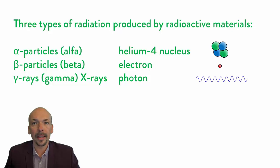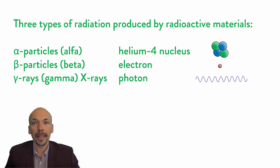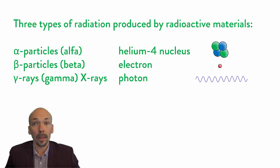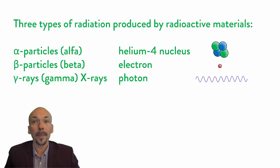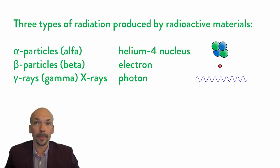When radiation hits a material or goes through it, it can alter it. If it hits our body or goes through our body, it can alter things and it can be damaging to our bodies. It does this by ionizing the material, and I'm going to show you what it looks like.